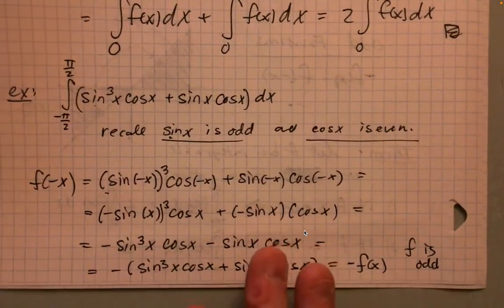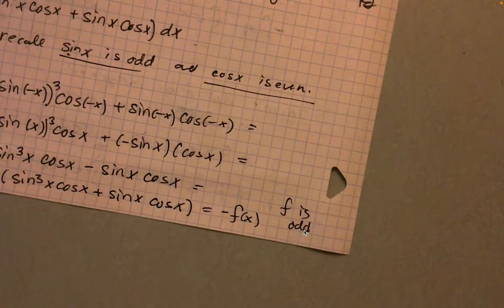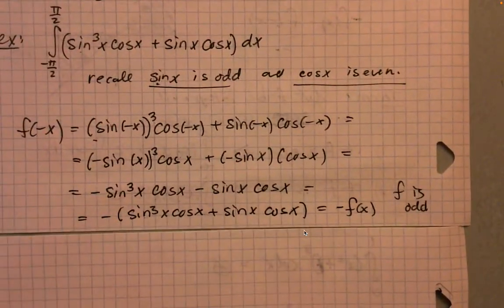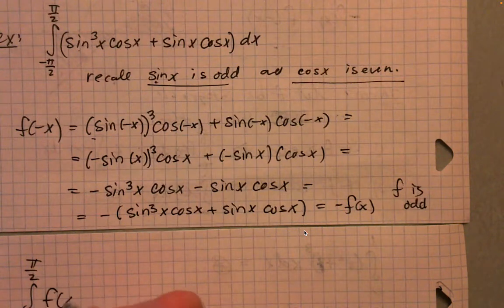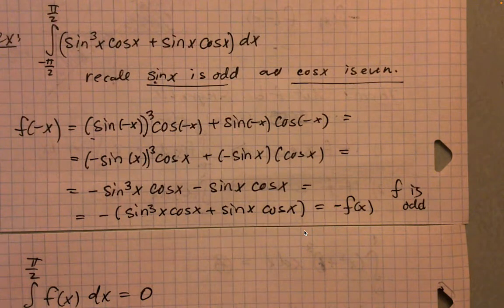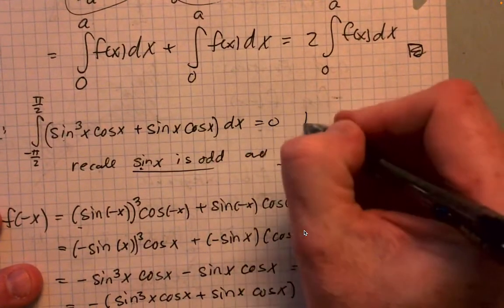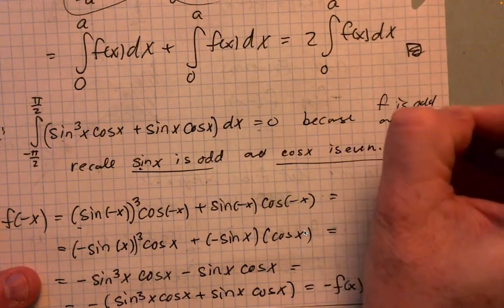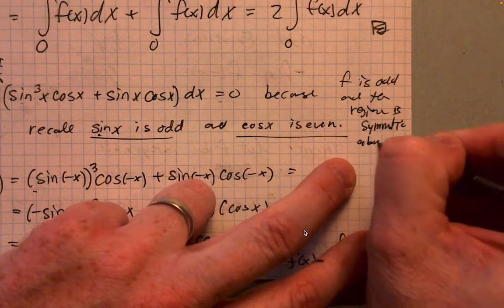Well that makes our lives very simple. Specifically, that makes our lives simple because if f is odd, and the definite integral that you're interested in is symmetric about the origin, which it is in this case, then the integral from negative pi over 2 to pi over 2 of an odd function is zero by the previous theorem. So basically that means this integral up here is equal to zero, because f is odd and the region is symmetric about x equals zero.